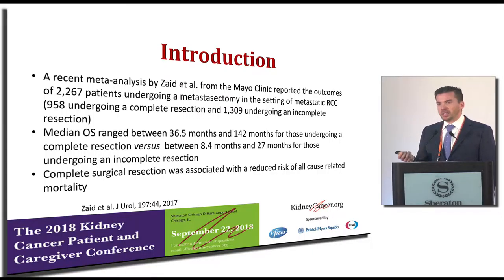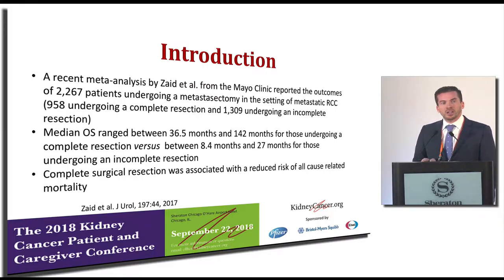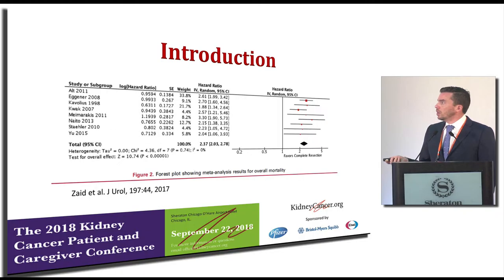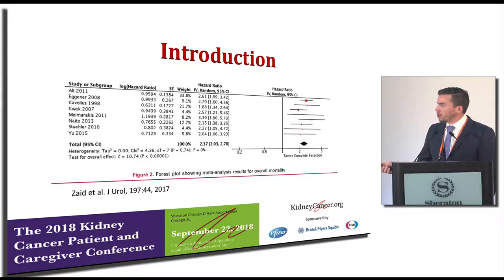Bottom line: if you can completely remove it, you do better. It's important to highlight that when you have your care, make sure the people caring for you have expertise, know they've done it before, and can discuss the morbidity and potential complications associated with that resection. This forest plot — a statistical way of combining all the data — shows that there's a favorable prognosis associated with complete resection. That hazard ratio of two essentially means about a two times greater chance of cure.